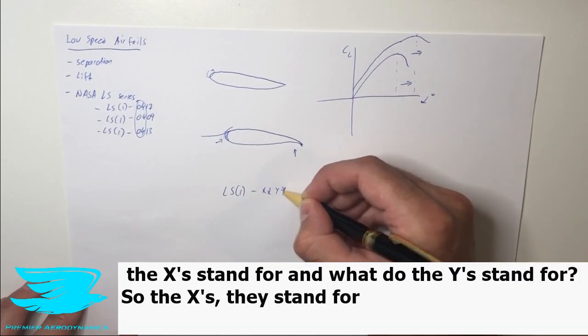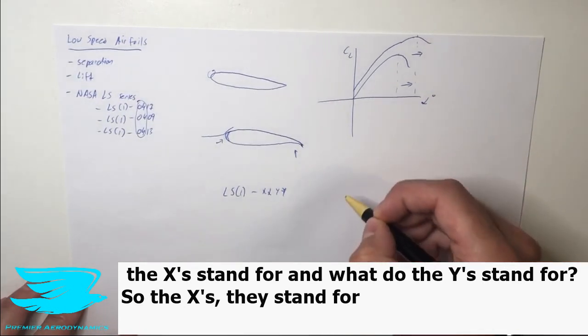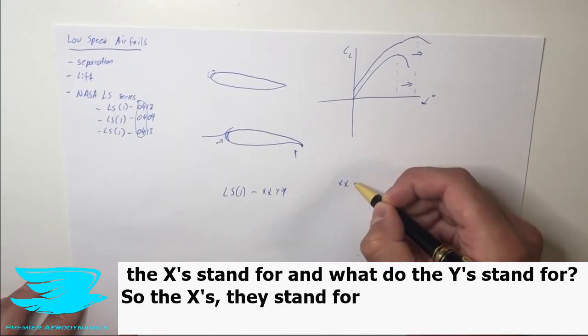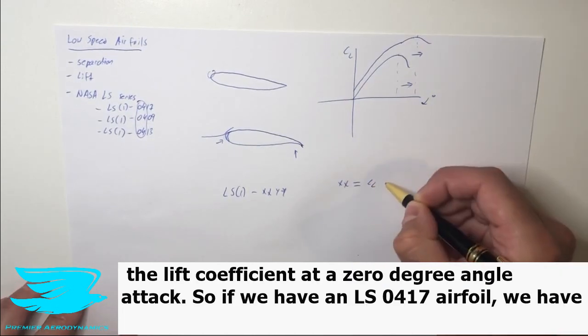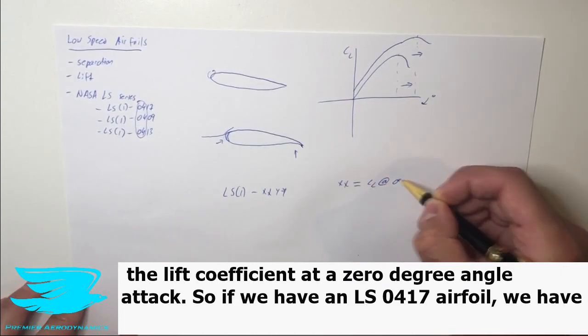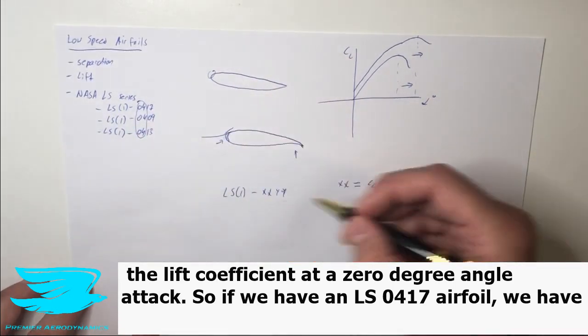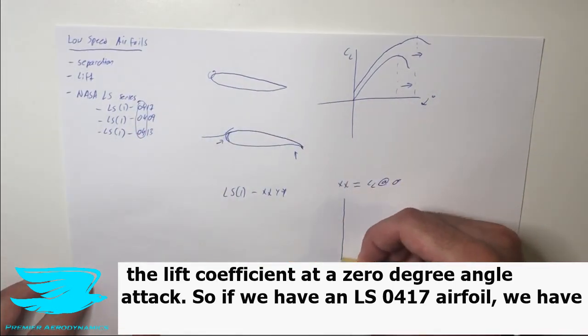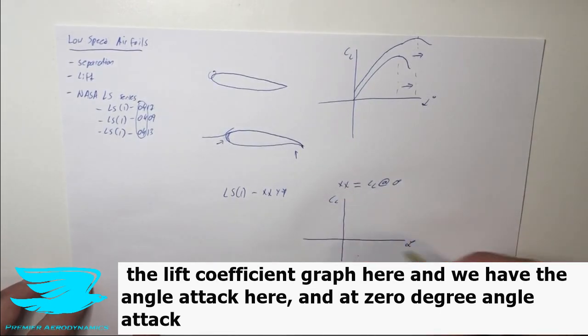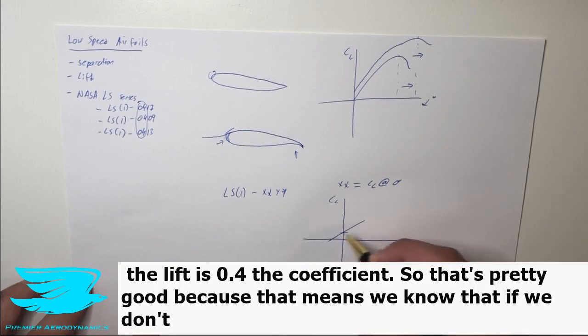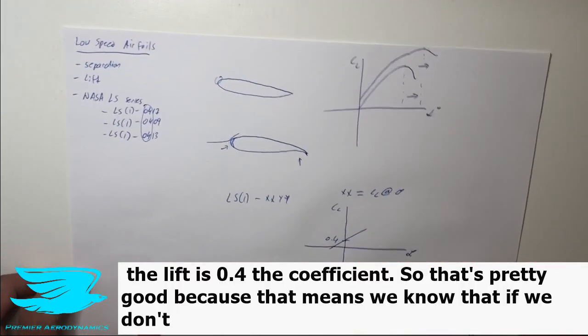So the X's, they stand for the amount of lift, so the lift coefficient CL at zero degree angle of attack. So if we have an LS04-17 airfoil, we have the lift coefficient graph here and we have the angle of attack here alpha. And at zero degree angle of attack, the lift is 0.4, the coefficient.